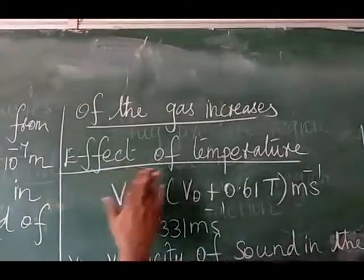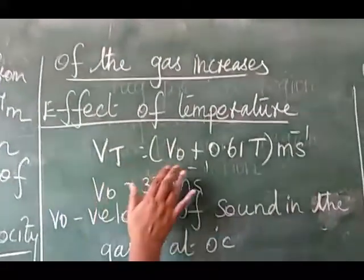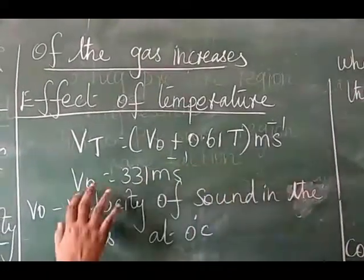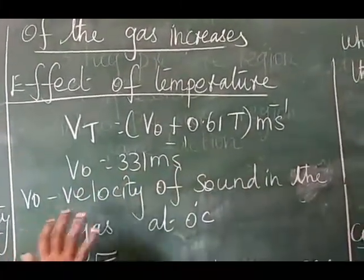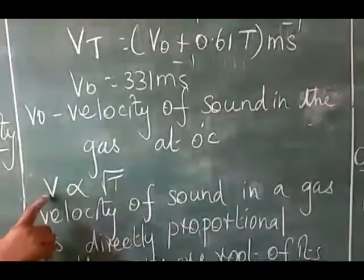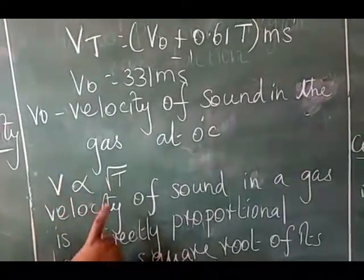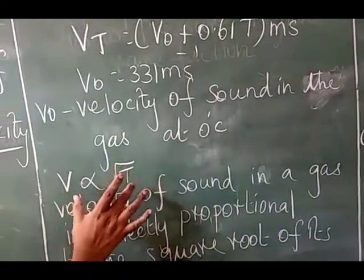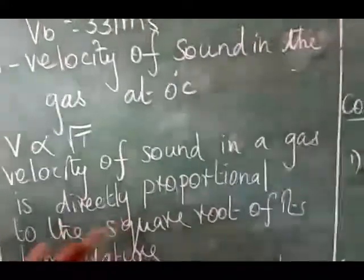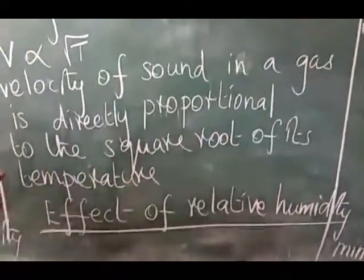Effect of temperature. Vt equals V0 plus 0.61 T meters per second. V0 equals 331. V0 is velocity of sound in the gas at 0 degree Celsius. Velocity of the sound is directly proportional to the square root of temperature.